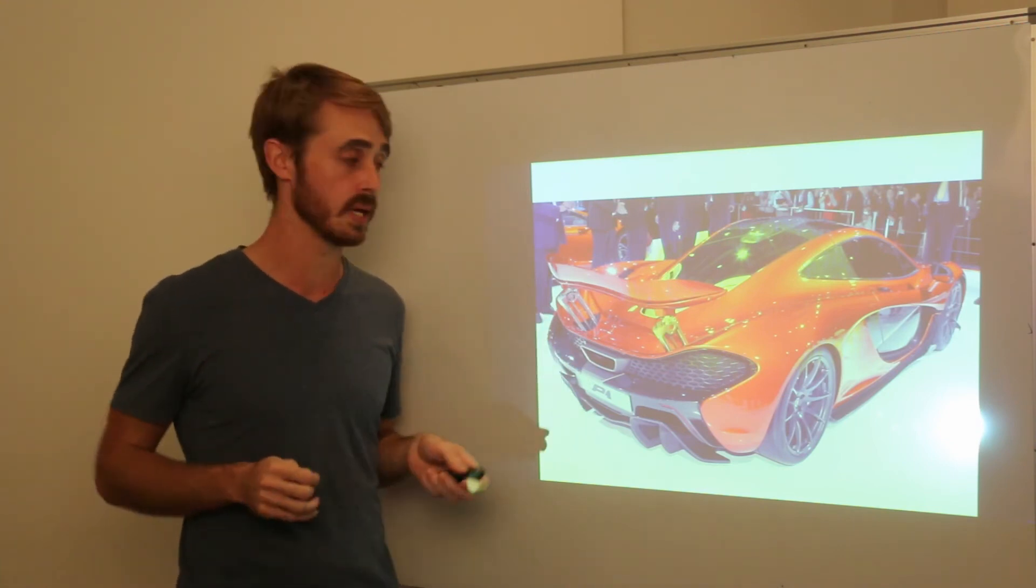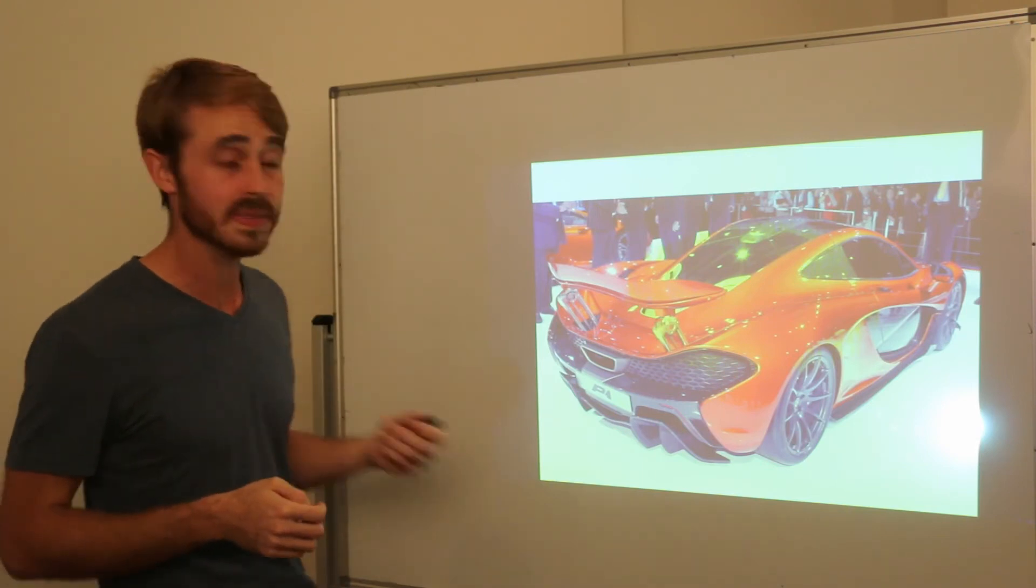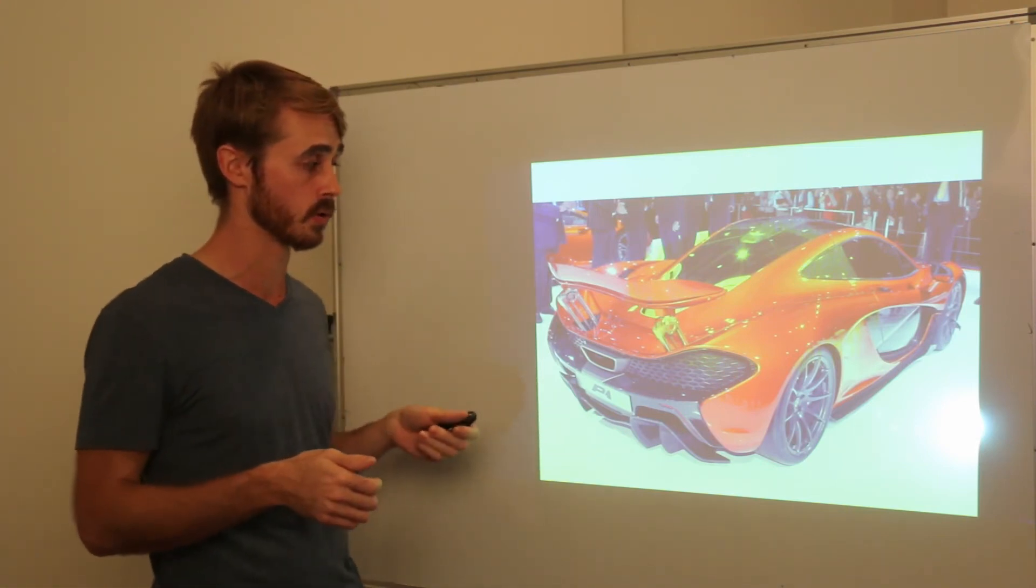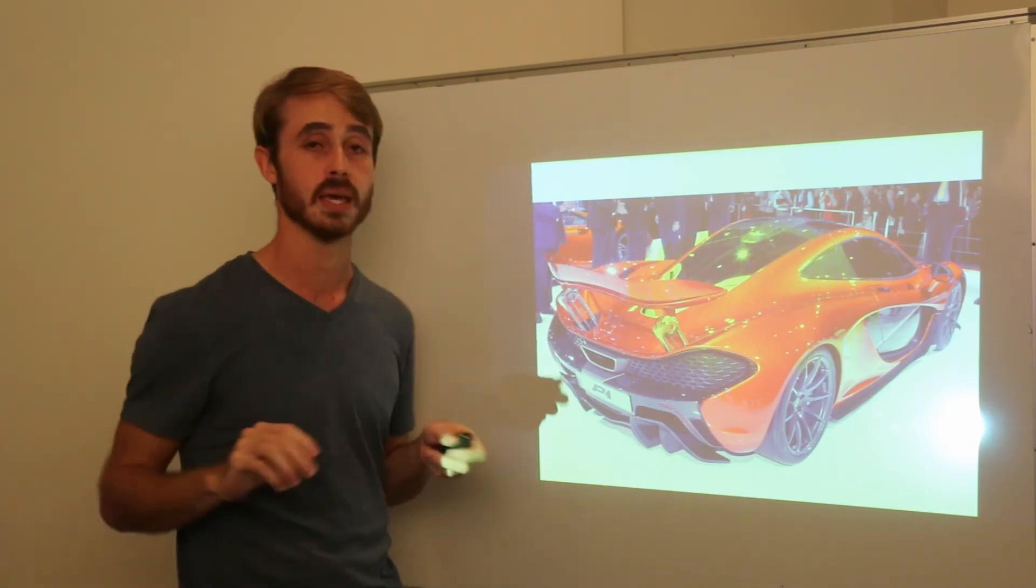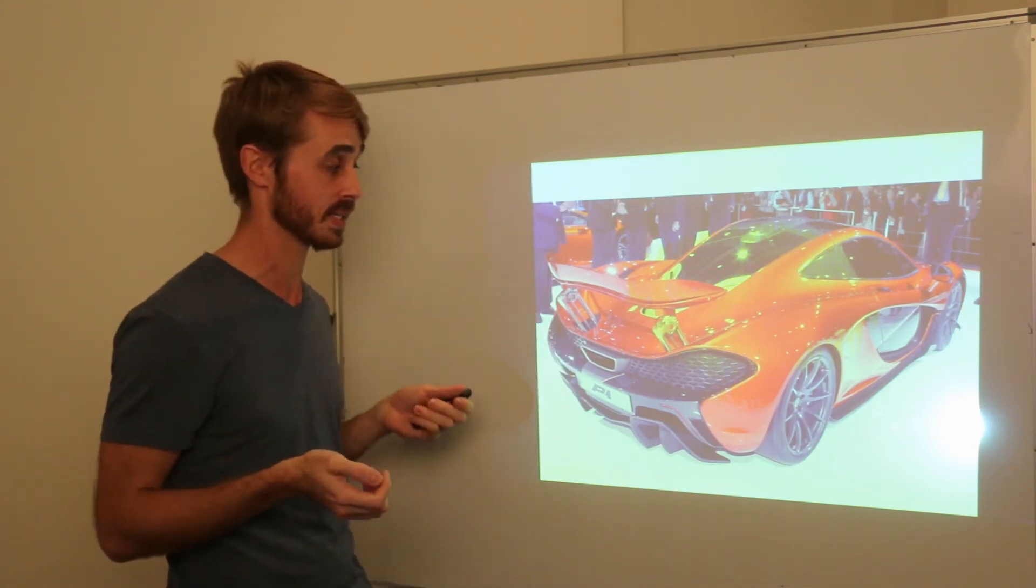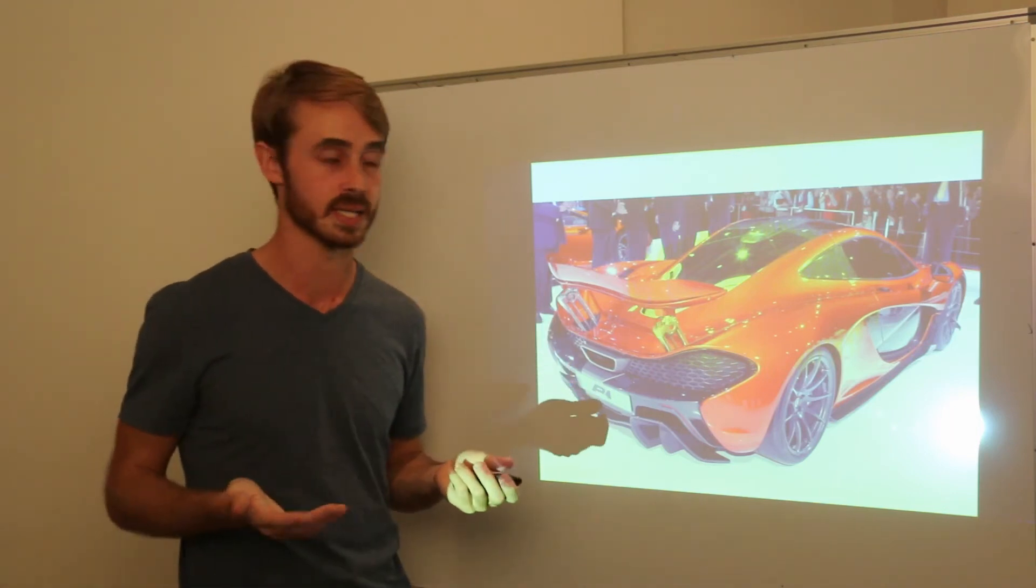The other thing that's good on the P1 is its DRS mode where it can just immediately snap flat the wing. If you just want to go straight it doesn't have to fully retract, and that's another feature I like, but again the Koenigsegg already does that.